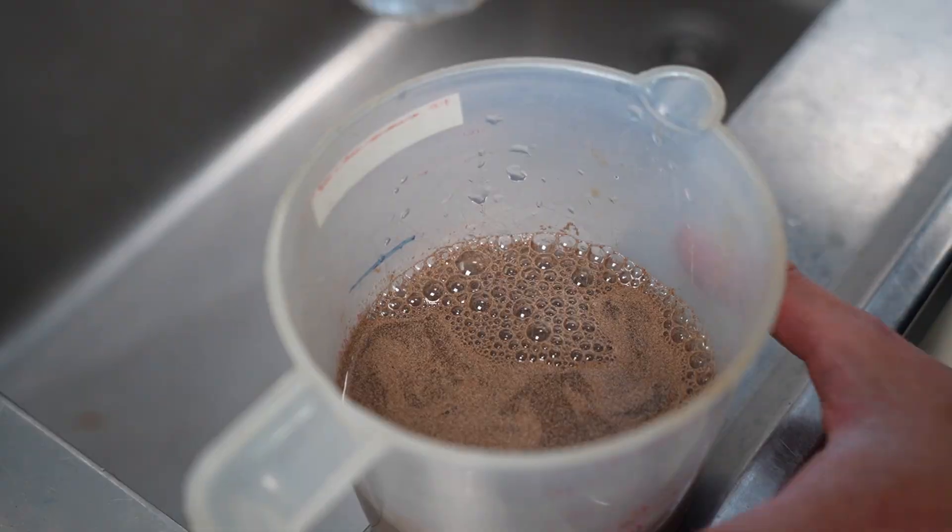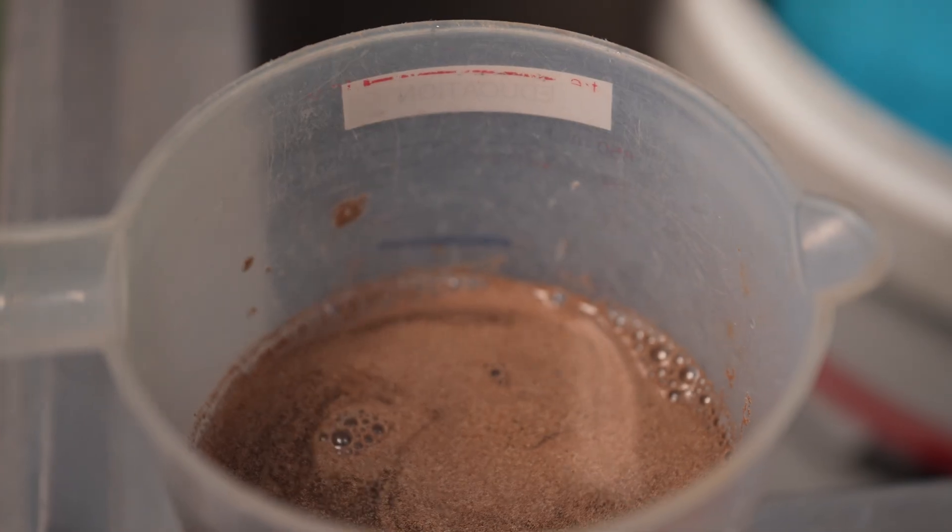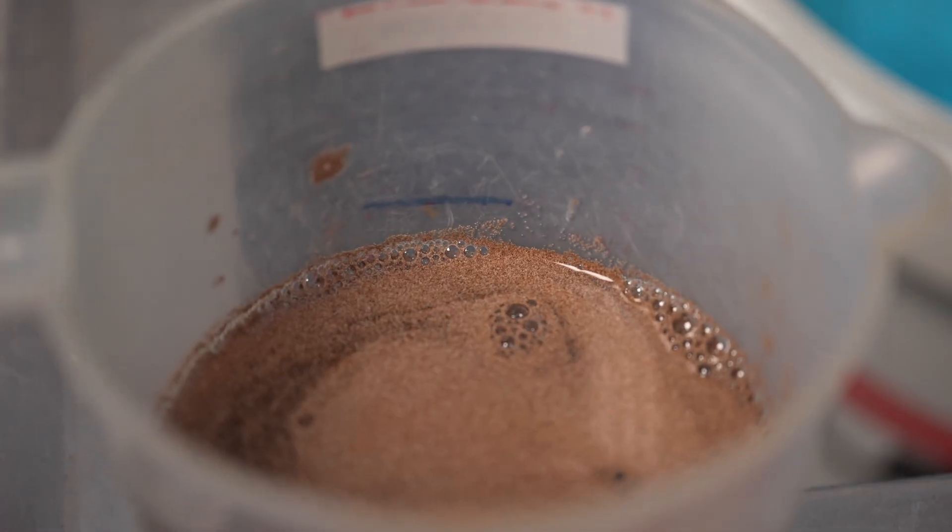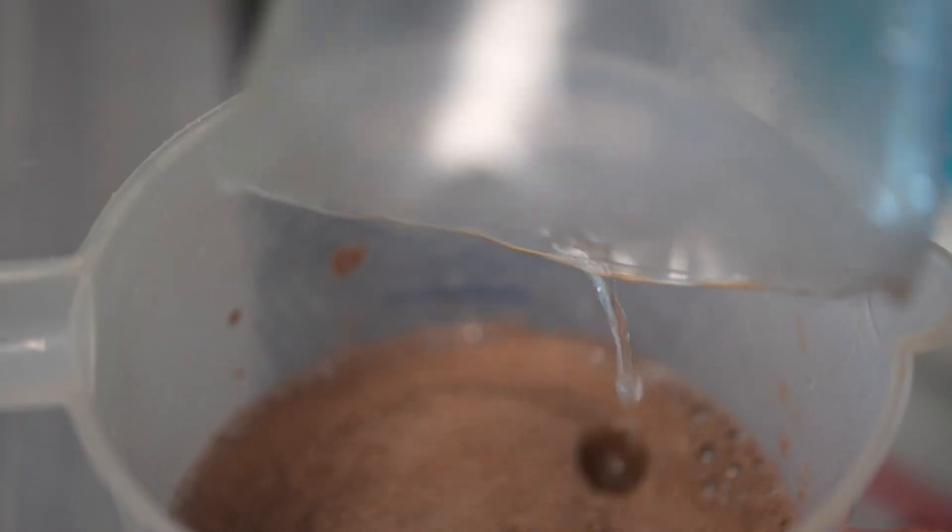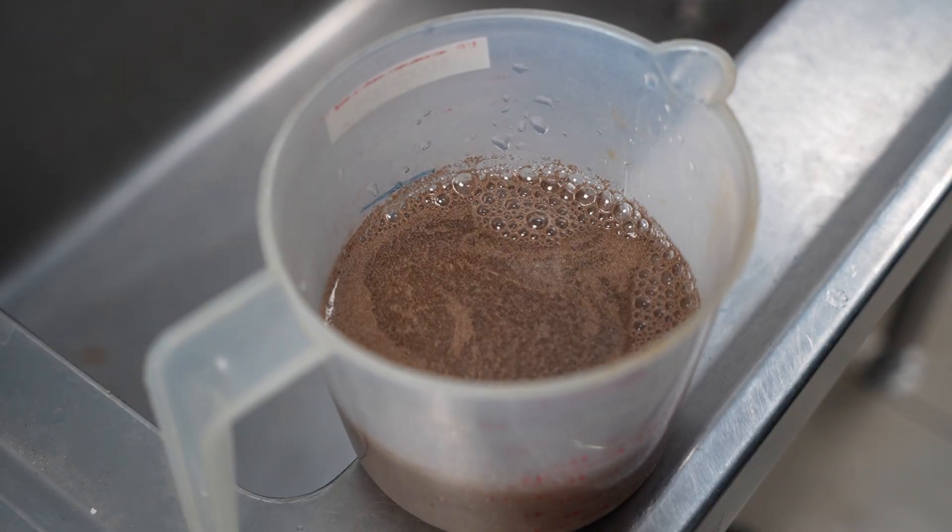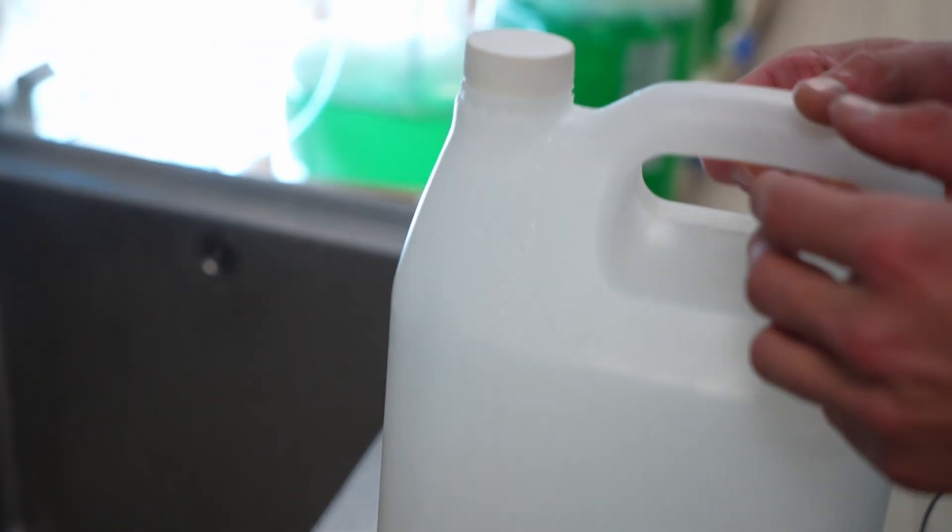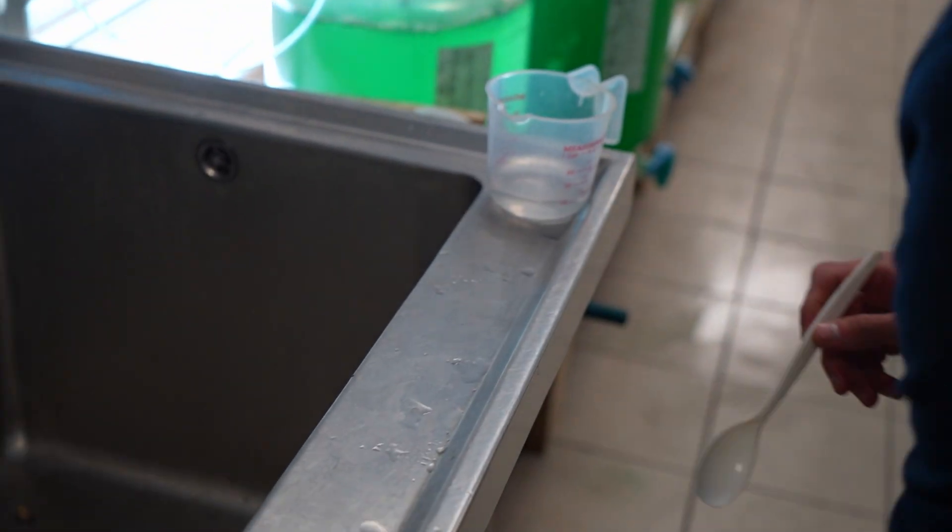Now I'm just using the water to wash off any of the eggs on the side and to get all the eggs up on the bottom. As much as we can, we don't want to waste any eggs. Now we've got our eggs in our jug. And then what we're going to do is we're going to use bleach. We're going to put bleach into the jug.